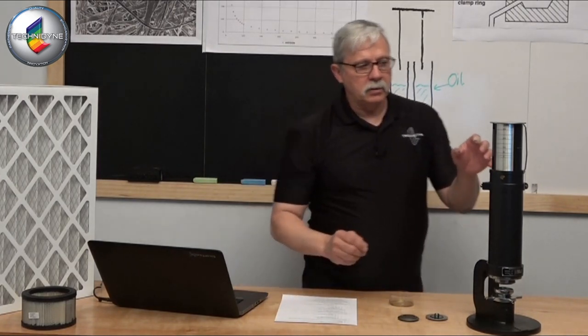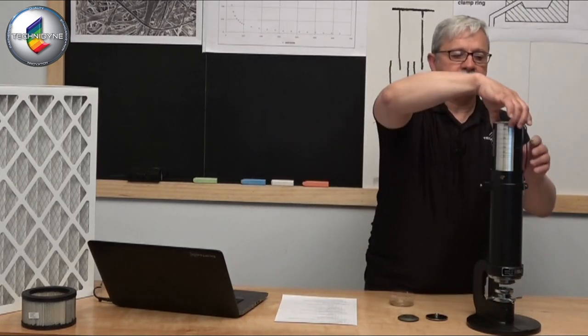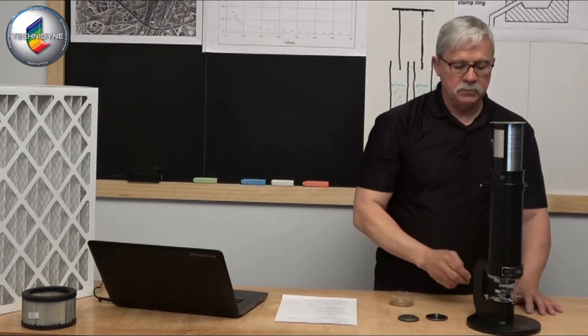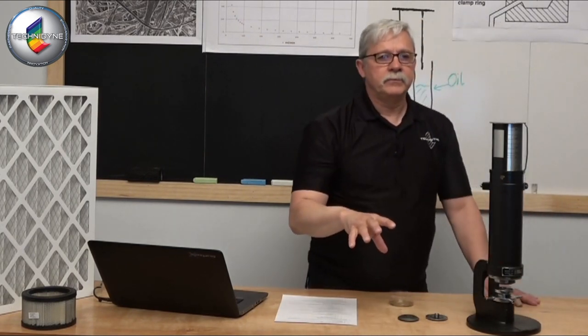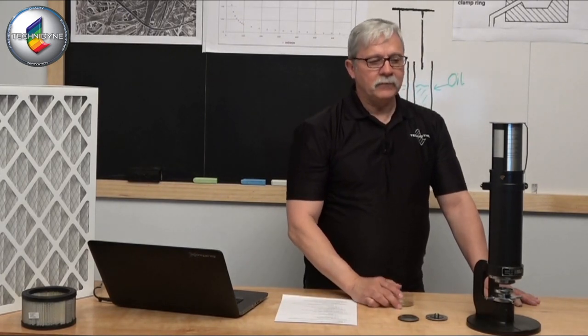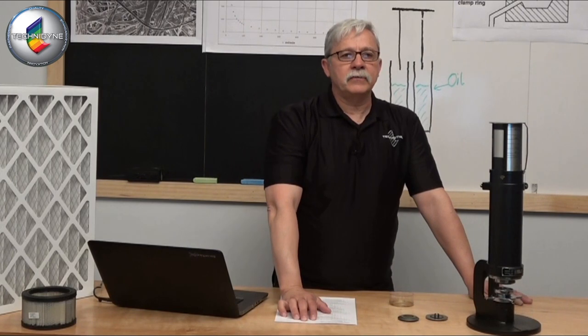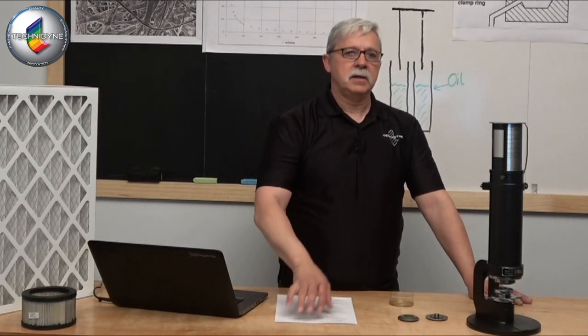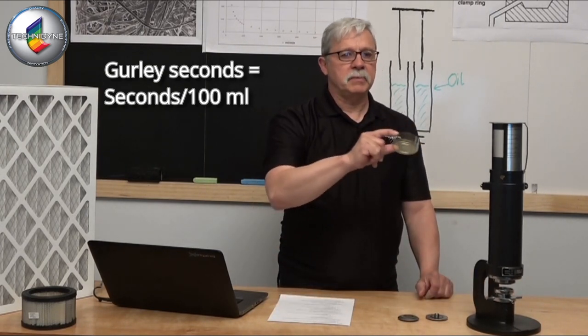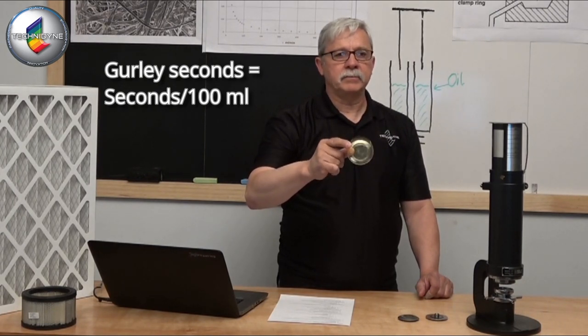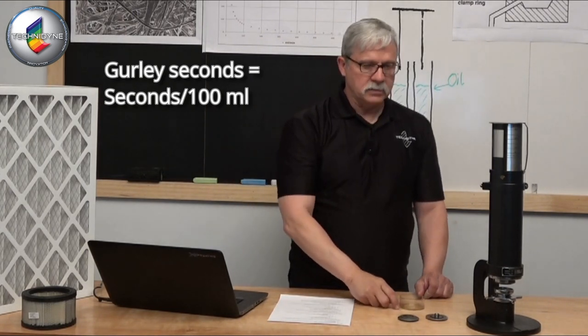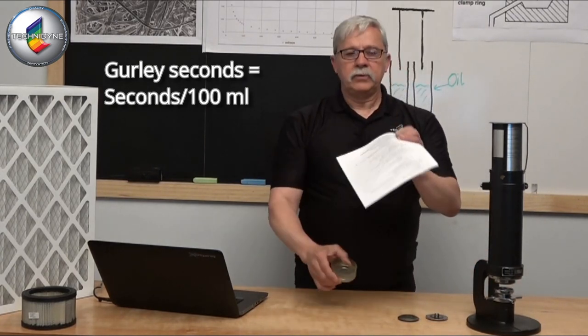So there are gradations on this cylinder here that help me define, as this travels into the center circle, the volume that's going to be moved through this particular sample that I have in place. That volume, the early definition for that volume was 100 milliliters of air. How many seconds does it take to move 100 milliliters of air through that sample? Just to give you an idea, this small cup here is 100 milliliters in volume. It's not a lot. There's not a lot of air to move through there.